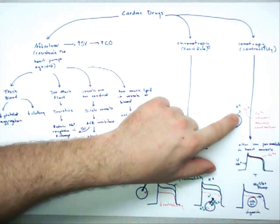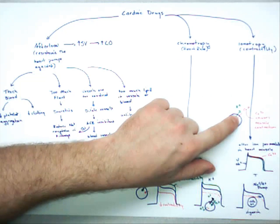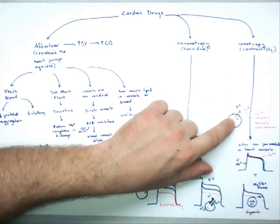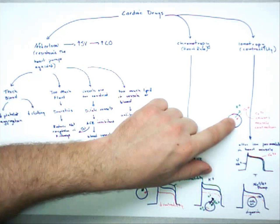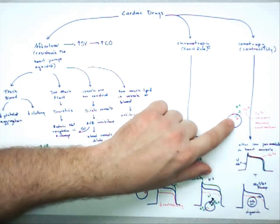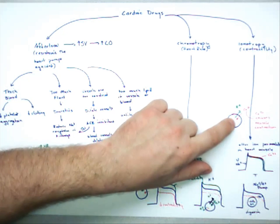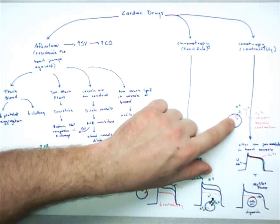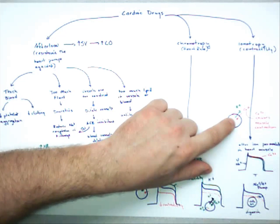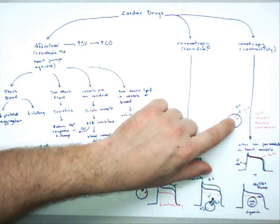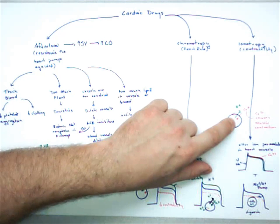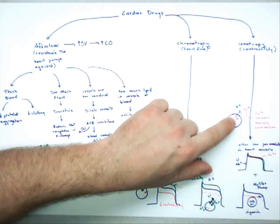As a sidebar on digoxin: the movement of potassium and calcium is dependent on the voltage potential inside the cell. The inside of the cell is negative, which drives calcium in — calcium is positive and wants to enter the negative cell. What digoxin does is reduce that voltage potential, so calcium is less likely to enter and potassium is less likely to leave.